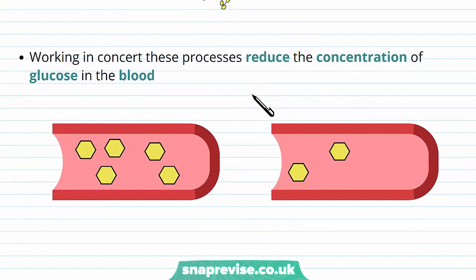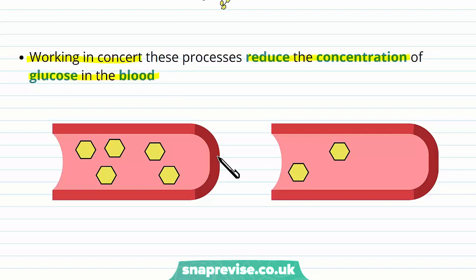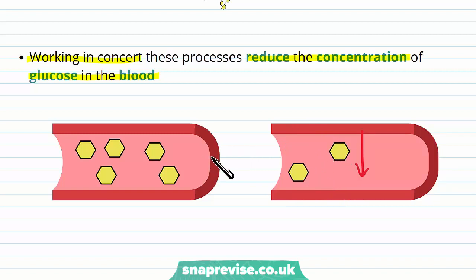With all of these processes happening and working in concert, they all reduce the concentration of glucose in the blood. Even if we're making more glycogen and more fats, the goal is to bring blood glucose down, because high glucose in the blood can be very harmful. So overall, this is the action of insulin.